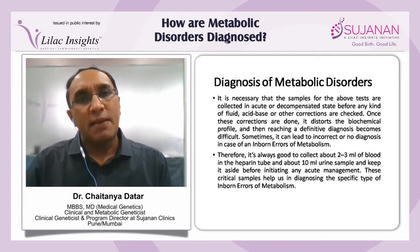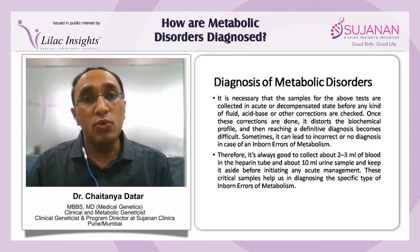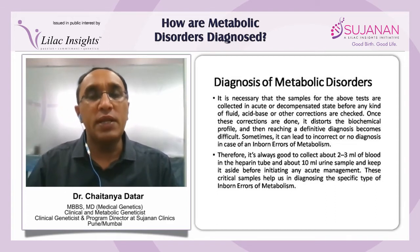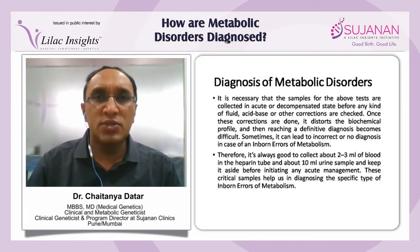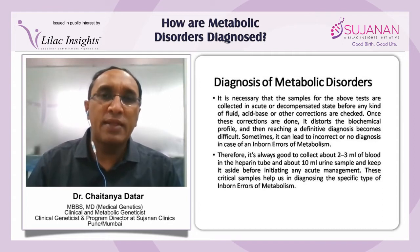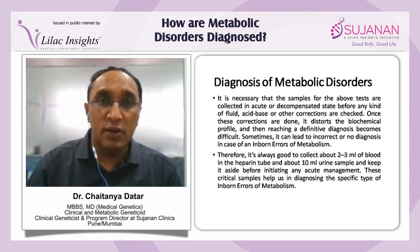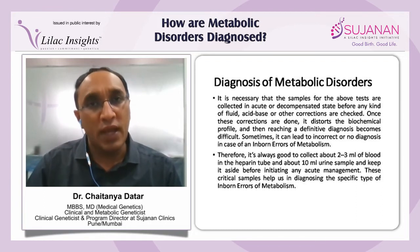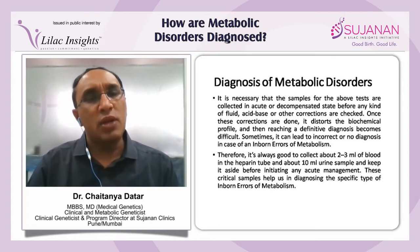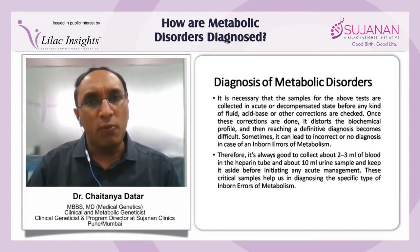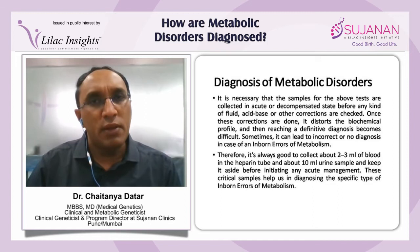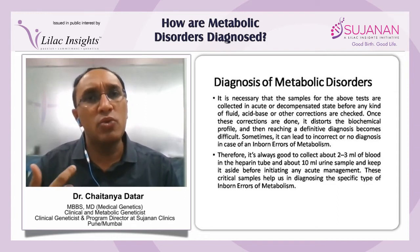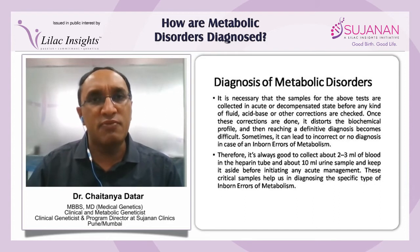It is necessary that the samples for the above tests are collected in an acute or decompensated state, before any kind of fluid, acid-base, or other corrections are done in the child. Because once these corrections are done, it destroys the biochemical profile and reaching a definitive diagnosis becomes difficult. So it is always a good idea to collect about 2-3 mL blood in a heparin tube and about 10 mL urine sample and keep it aside before initiating any acute management.